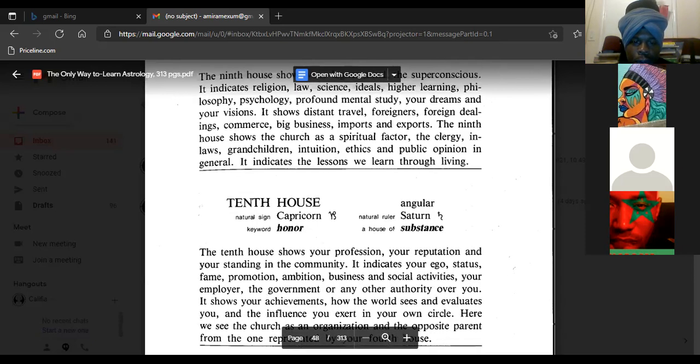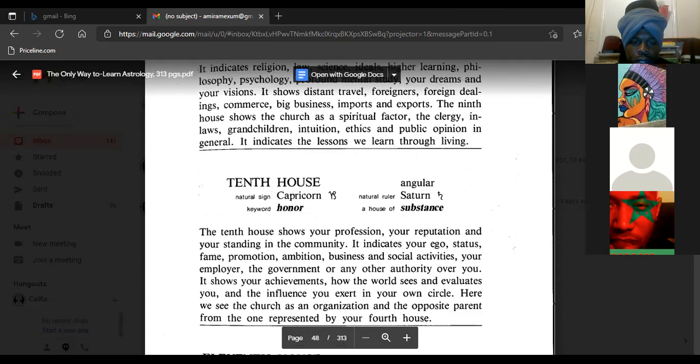Tenth house, natural sign Capricorn, keyword honor, angular, natural ruler Saturn, a house of substance. The tenth house shows your profession, your reputation, and your standing in the community. It indicates your ego, status, fame, promotion, ambition, business and social activities, your employer, the government or any other authority over you. It shows your achievements, how the world sees and evaluates you, and the influence you exert in your own circle.